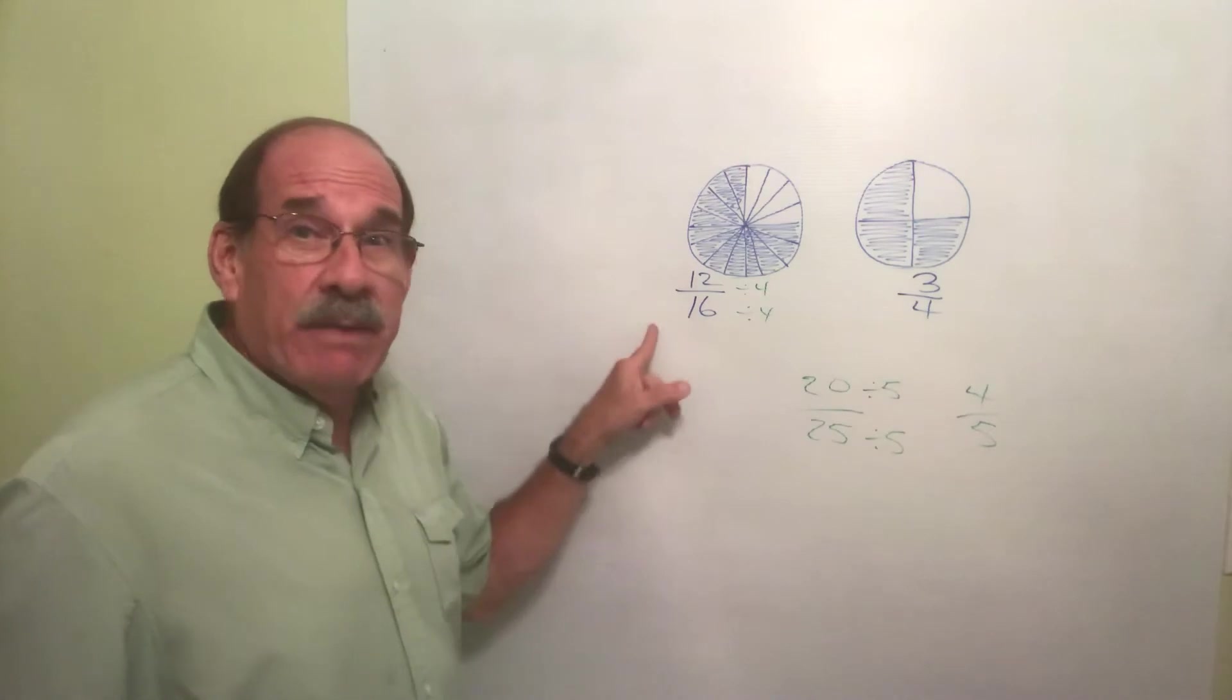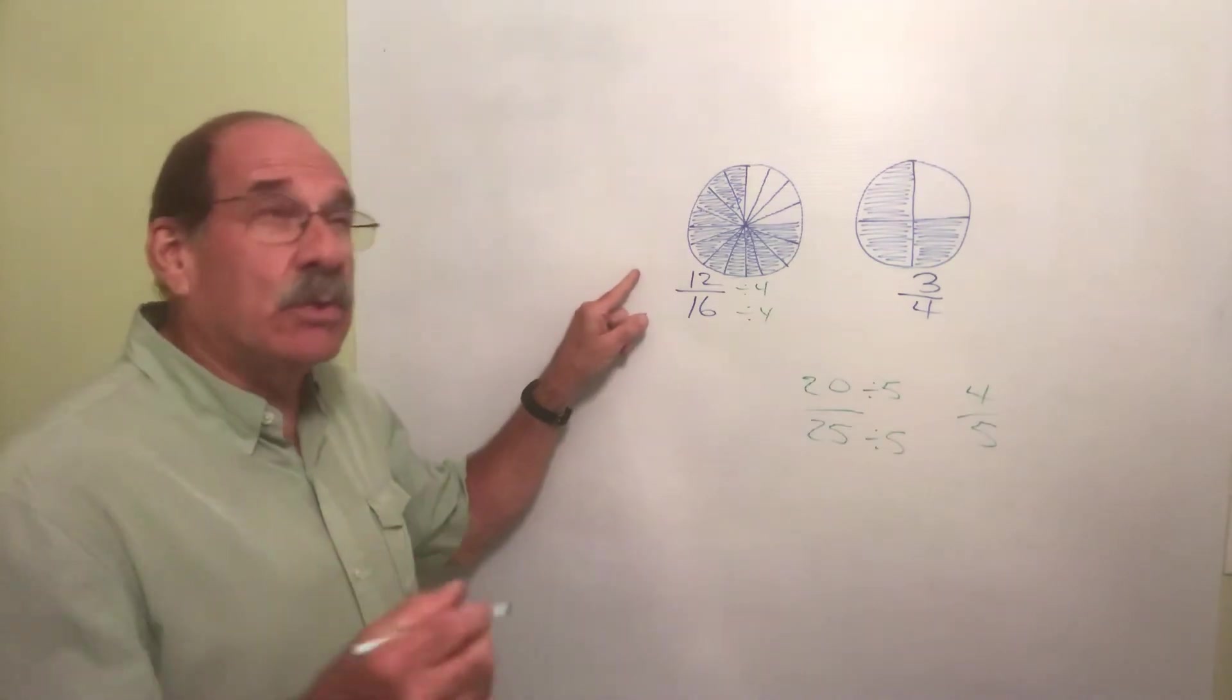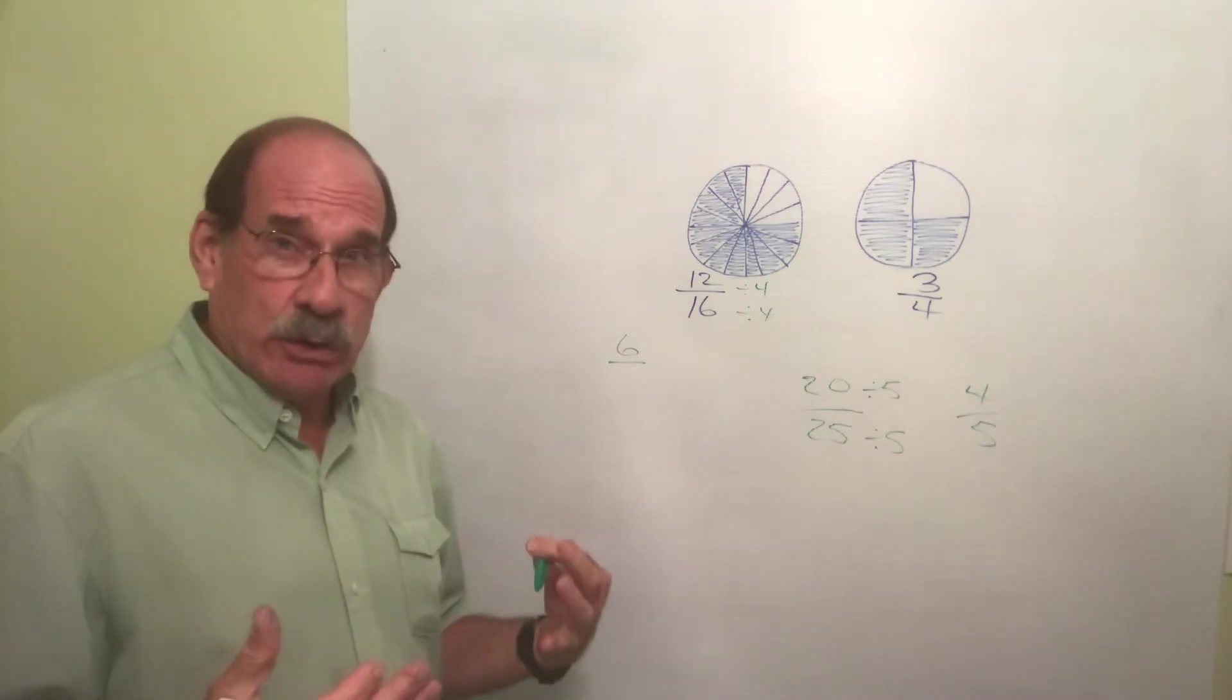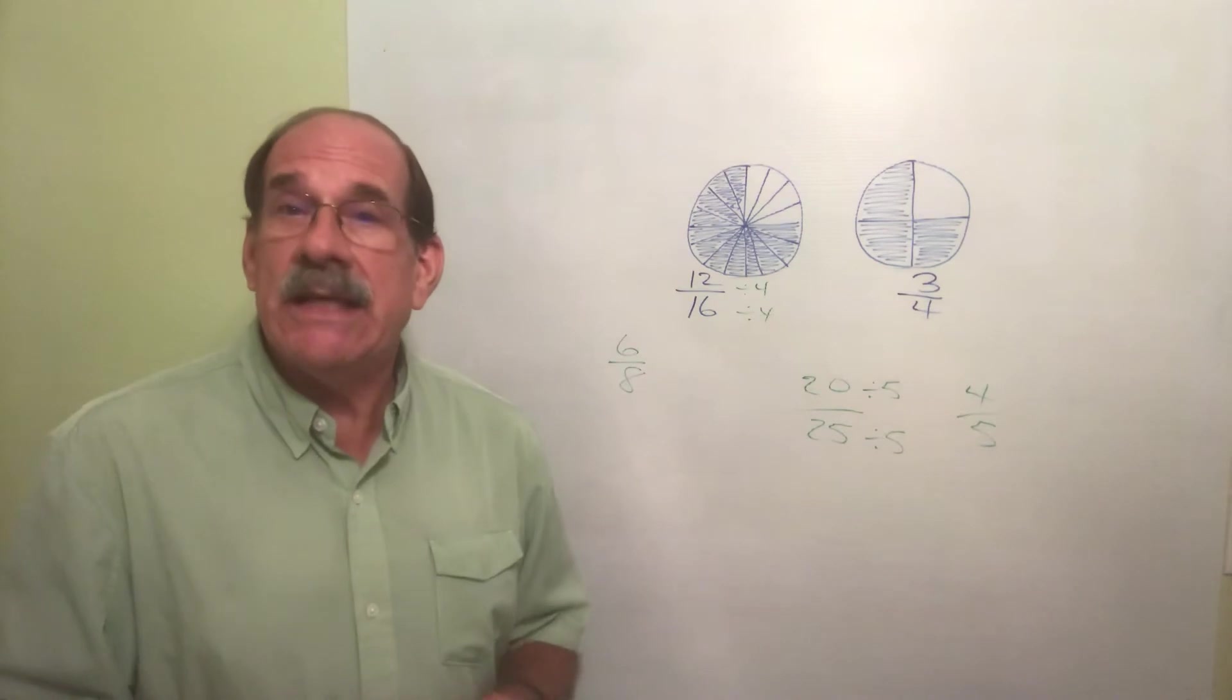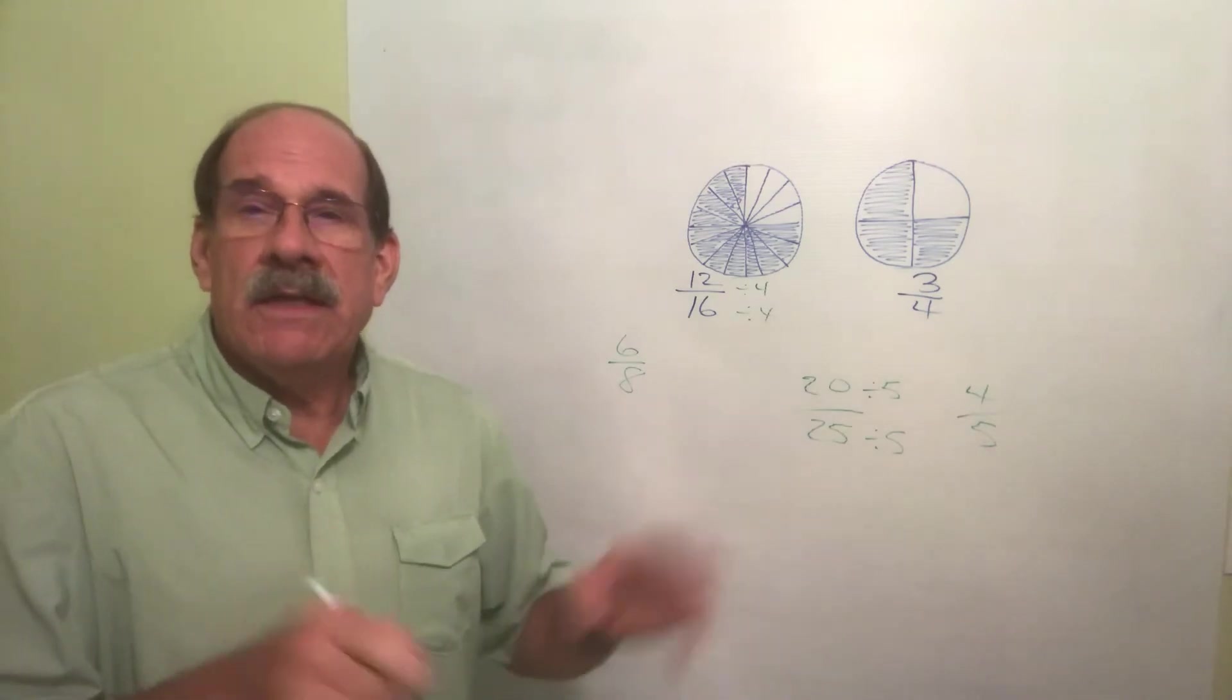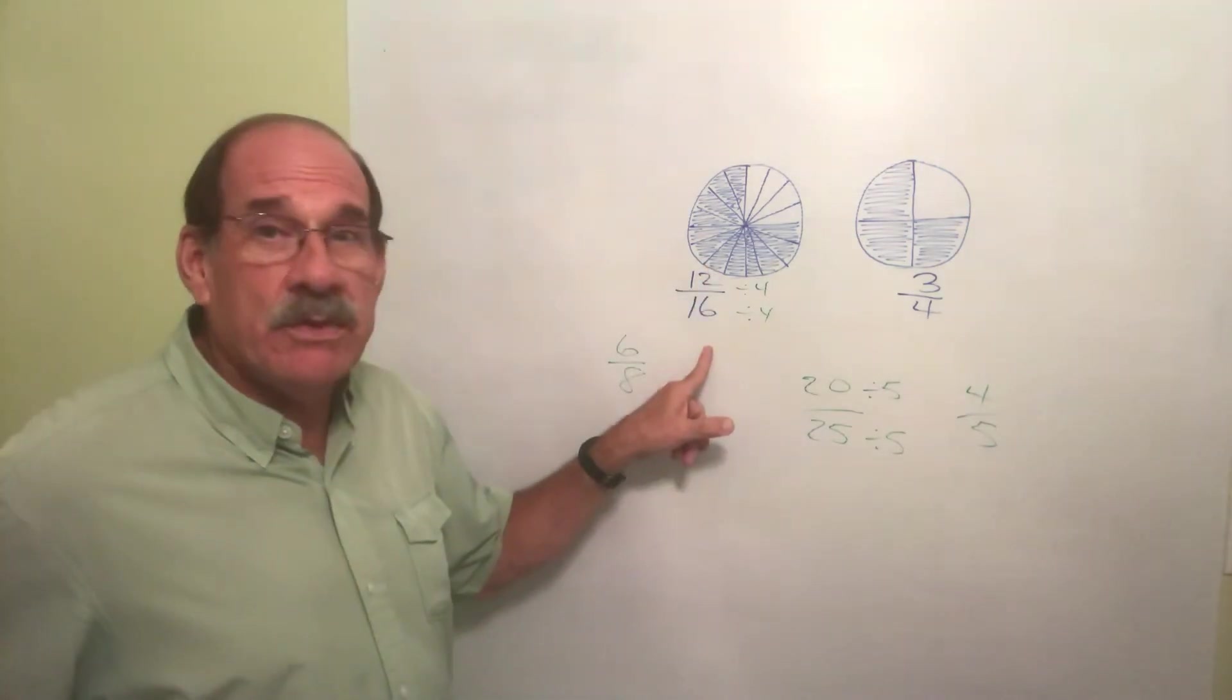But I can divide both these by 2, can't I? If I divided 12 by 2 - 12 divided by 2 is 6. Divide 16 by 2 - 16 divided by 2 is 8. Well, I've reduced it, haven't I? Yes I have, but it's not reduced as far as it goes. I got to keep going. The simplest way is to think of the largest number that you can divide both those by, which in this case is 4.